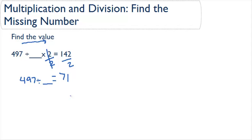Now understanding division, we know that if 497 divided by some number is equal to 71, then 497 divided by 71 has to also be equal to that same number. So what's 497 divided by 71? It's equal to 7. That means that we can fill in our original blank with a 7.